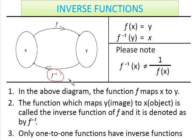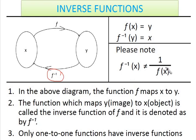Only one-to-one functions have an inverse function. So if f(x) equals y, the inverse function gives y equal to x. Please note that f to the power of negative 1 is not equal to 1 over f(x) — this is very important.